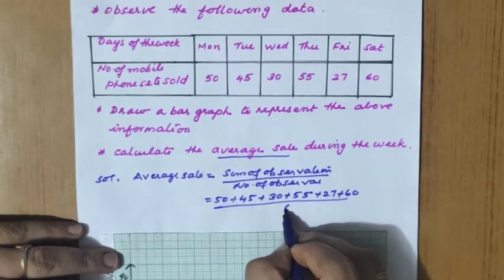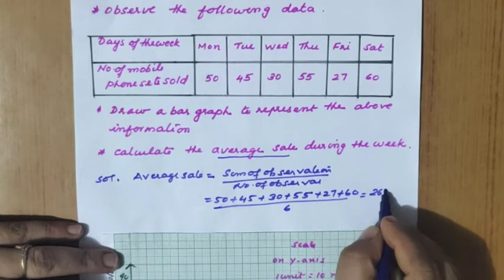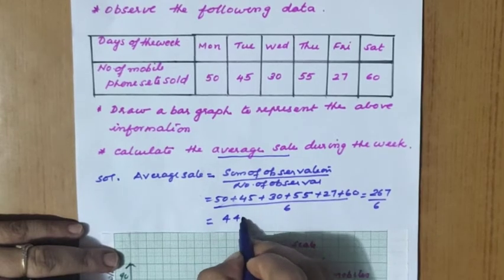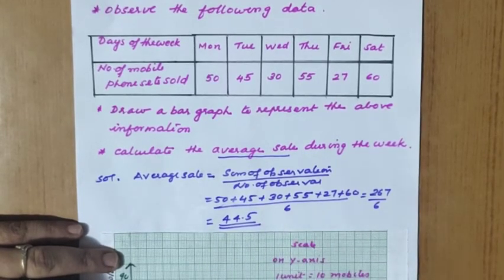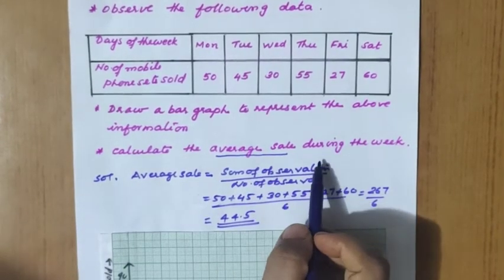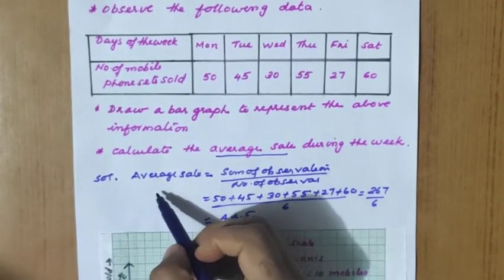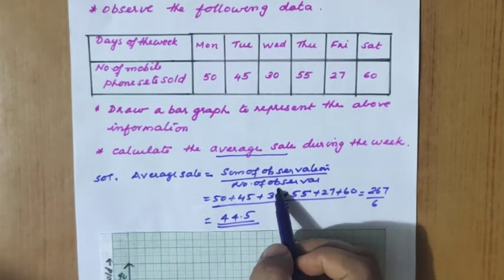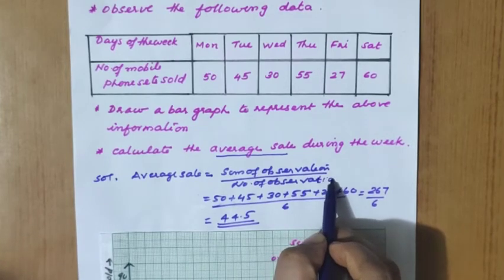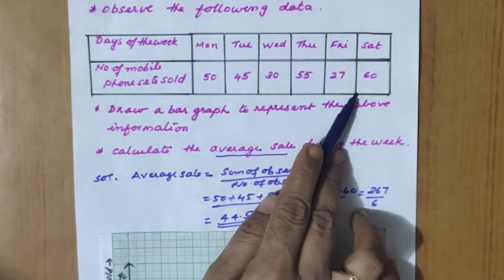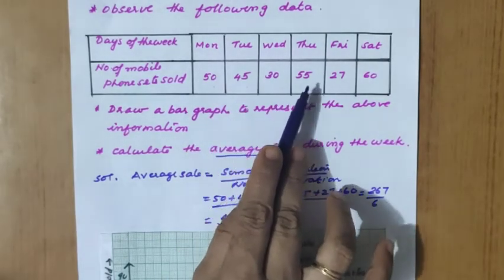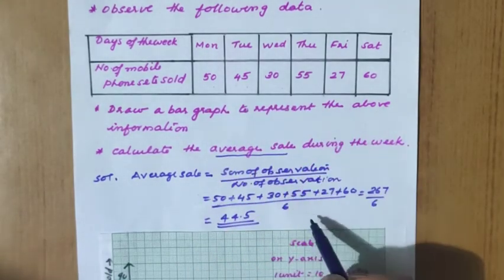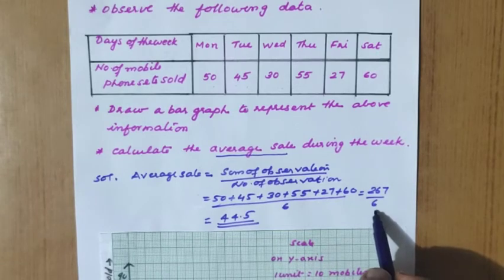Average = (50 + 45 + 30 + 55 + 27 + 60) ÷ 6 = 267 ÷ 6 = 44.5. The average sale is 44.5 mobile phones. Average sale is the same as arithmetic mean - sum of observations divided by number of observations. There are six observations, one for each day.